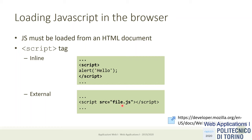The other case — which is the normal one — is including an external file using the source attribute, telling the browser where to find the script. That could be on the same server or in some cases also on external servers.